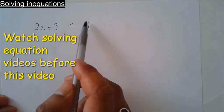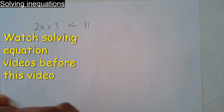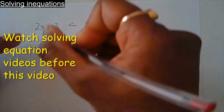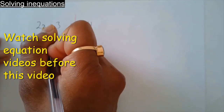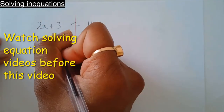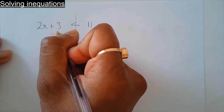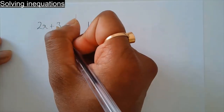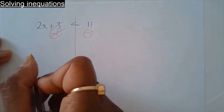Solving these inequalities is very similar to solving equations. So to find out what x is, get rid of plus 3. The opposite of plus 3 is take away 3 — do the same on the other side. 3 take away 3 is zero, they cancel out, and you're left with 2x.